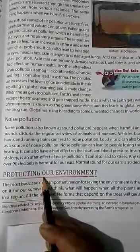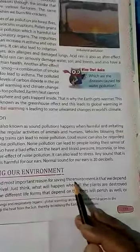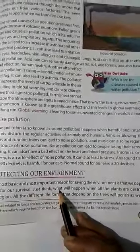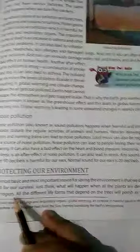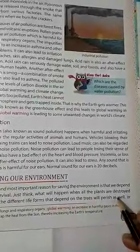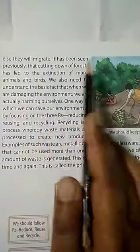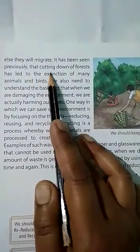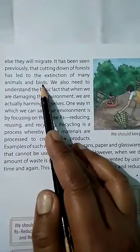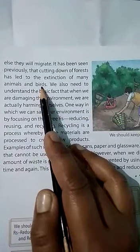How can we protect our environment? The most basic and important reason for saving our environment is that we depend on it for our survival. Just think what will happen when all the plants get destroyed — all the different life forms that depend on trees will perish or migrate. It has been seen that cutting down forests has led to the extinction of many animals and birds, as they have lost their homes.